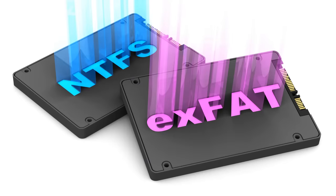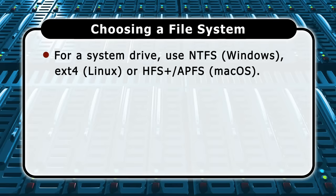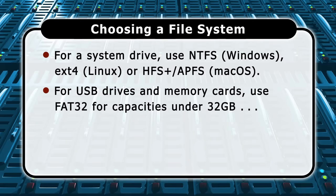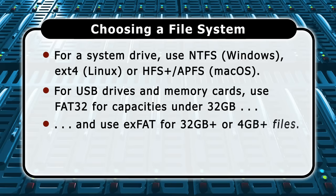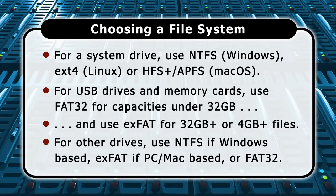Which file system should you choose? For your system drive, you should choose the file system for your chosen operating system — NTFS for Windows, EXT4 for a Linux distro, or HFS Plus or APFS on a Mac. For USB drives and flash memory cards, FAT32 remains the best choice for devices below 32GB in capacity to maximise compatibility across platforms. exFAT is the best choice for a flash drive or memory cards of 32GB capacity or more, or when you need to store files greater than 4GB in size. For external hard drives or SSDs, NTFS is the best choice for anybody who is entirely or primarily Windows-based, while exFAT is probably the best choice for anybody who regularly shares files between a PC and a Mac. Subject to its file size and volume size limitations, FAT32 also remains an option for external drives that need to be accessed across a wide range of Windows, Mac and Linux systems.